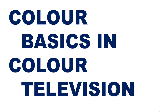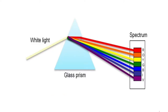First, we will see what we mean by dispersion of light. Whenever white light is passed through a prism, it will be dispersed into seven colors as shown in the figure. White light is incident on a prism, and because of refraction and different wavelengths, seven colors come out.